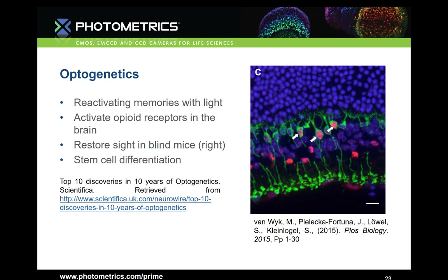Some highlights include reactivating memories with light and restoring sight to blind mice. Researchers at the University of Bern, Switzerland studied light sensitivity of intact photoreceptor cells in the inner retina, which are hypothesized to continue functioning even after the outer retina has undergone significant photoreceptor degradation. This is a confocal image where white arrows represent functioning rod bipolar cells in the inner retina even after the outer retina is shown not to function.